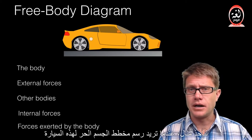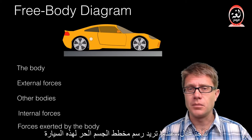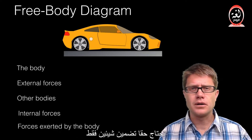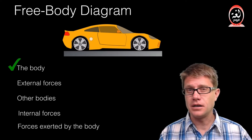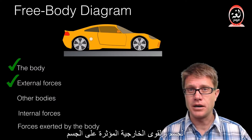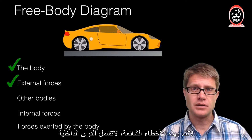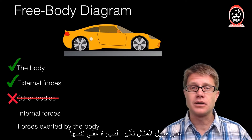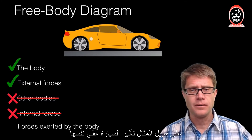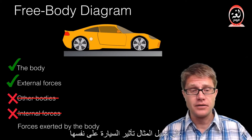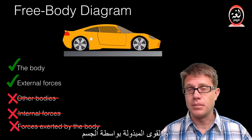When you are drawing a free body diagram — for example of this car — you really want to include only two things: the body and the external forces acting on the body. Don't make these common mistakes: don't include other bodies, don't include internal forces (for example the car acting on itself), and don't include forces exerted by the body.